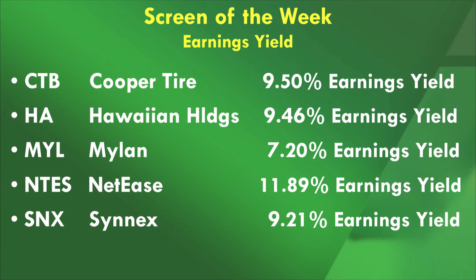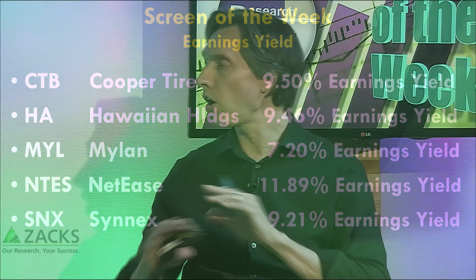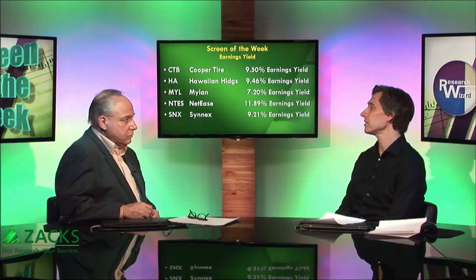Here are five that jumped out: Cooper Tire with a 9.5% earnings yield, Hawaiian Holdings at 9.46%, Milan at 7.2%, NetEase at 11.89% — that's a pretty big one — and Cinex at 9.21%. All of these stocks have great fundamentals, a wonderful Zacks rank, and a very attractive earnings yield for the risk you have to take.